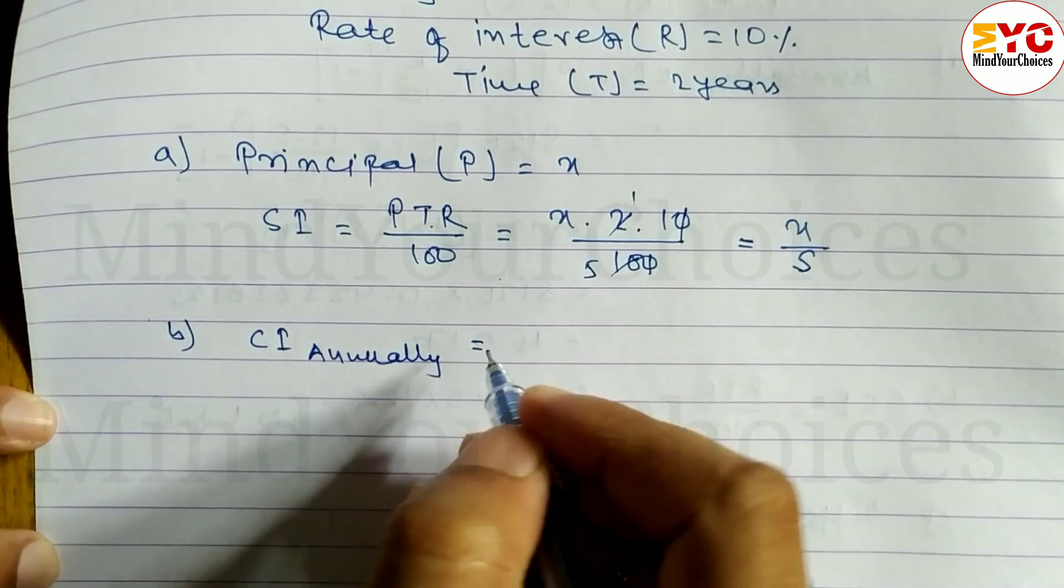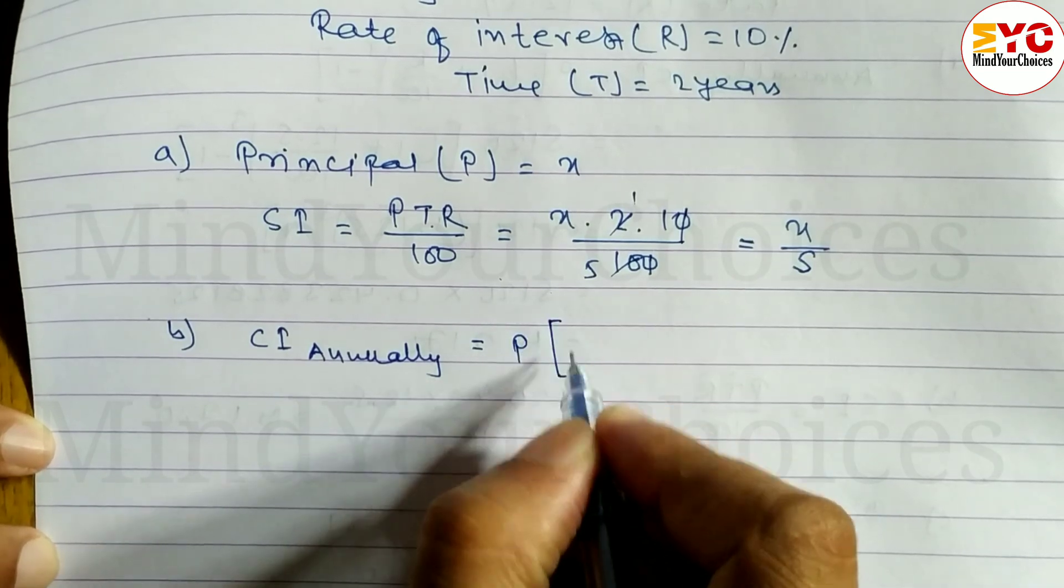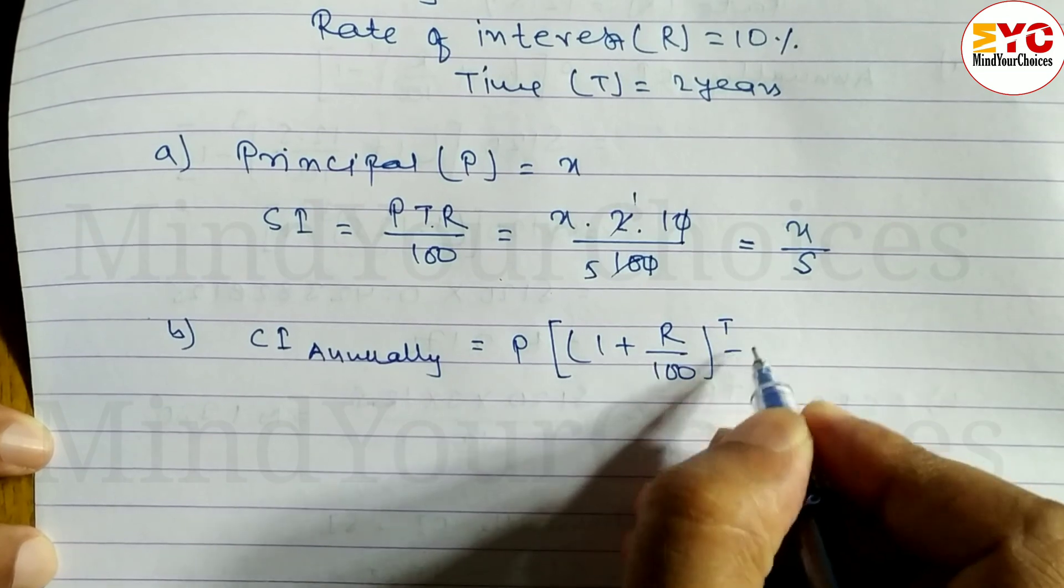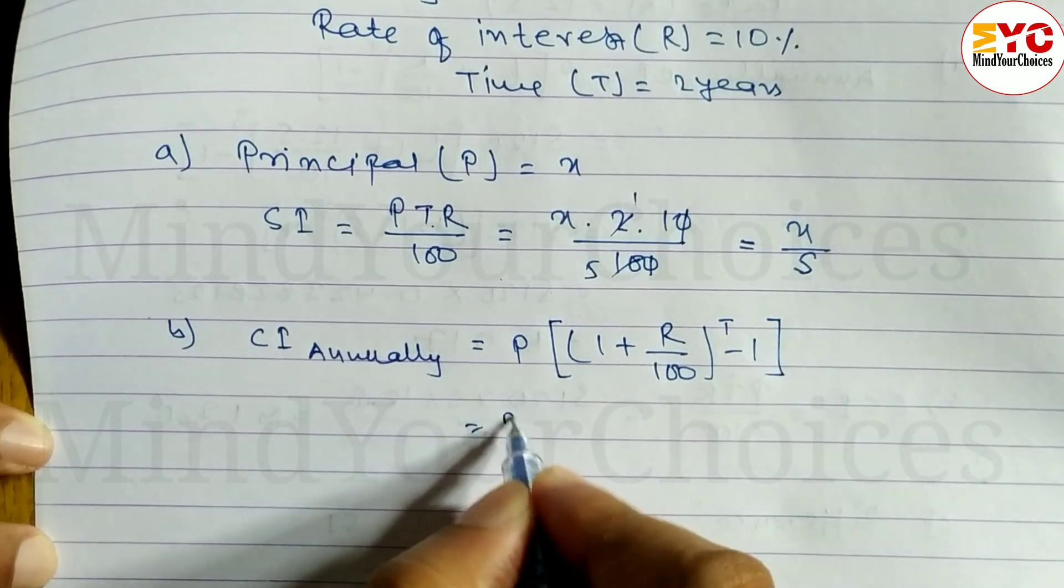CI annually is equal to the formula P times (1 plus R/100) to the power T minus 1. In place of P we will put x.